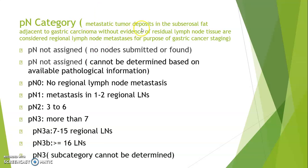For the PN category of stomach: metastatic tumor deposits in the subserosa fat adjacent to gastric carcinoma, without evidence of residual lymph node tissue, are considered regional lymph node metastasis for purpose of gastric cancer staging. PN not assigned when no nodes submitted or when it cannot be determined from pathologic information. N0 — no regional lymph node metastasis. N1 — 1 to 2 nodes. N2 — 3 to 6 nodes. N3 — more than 7, further divided into N3A (7–15 nodes) and N3B (≥16 nodes). PN3 when subcategory cannot be determined.